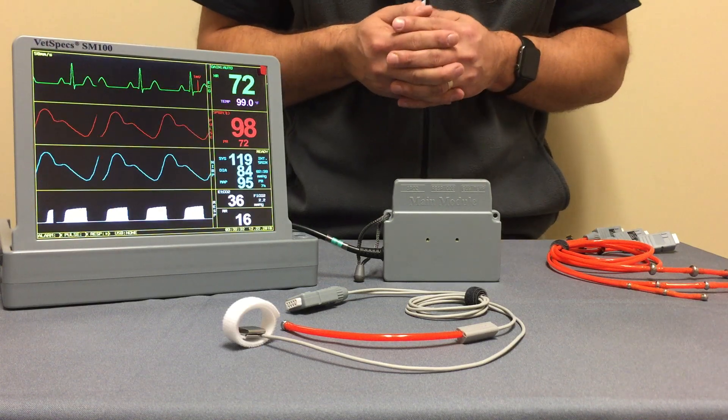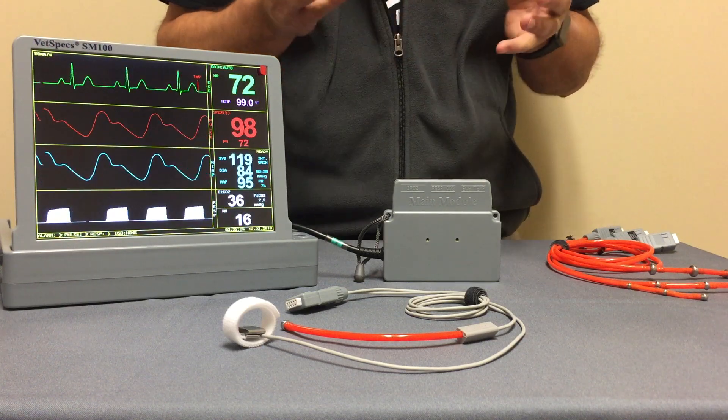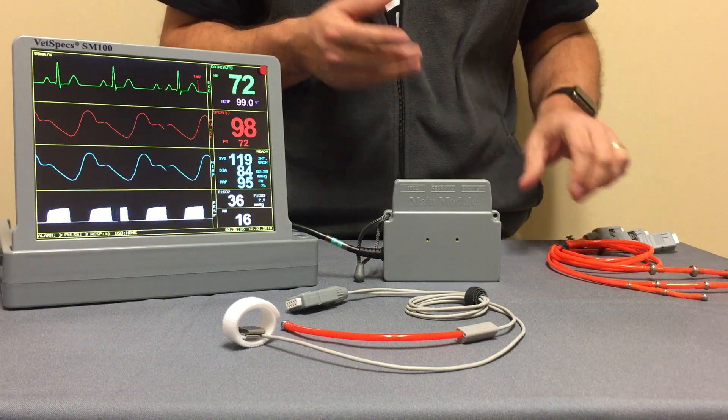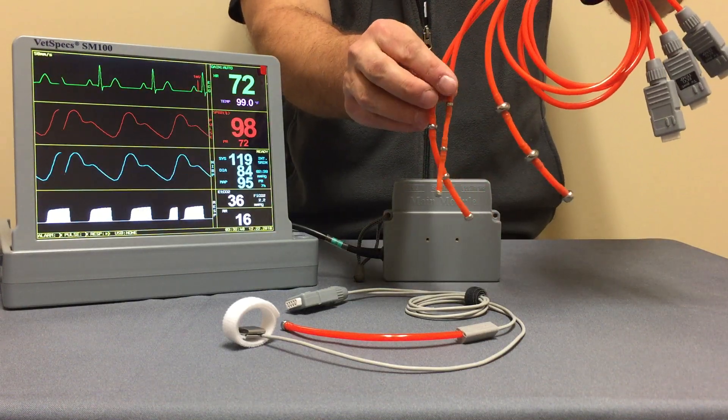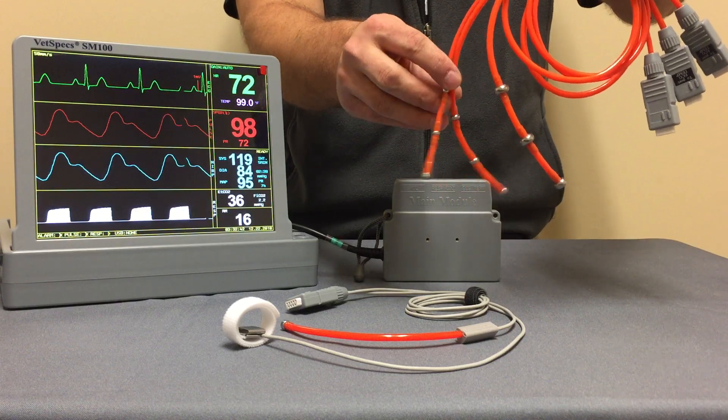Now for patients that are intubated and in surgery, VetSpec has had for a number of years a tried-and-true component and that's the ECG esophageal probes. Three different sizes are available.